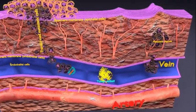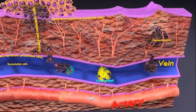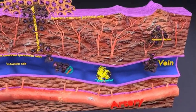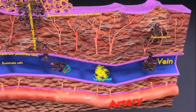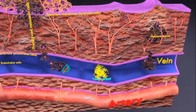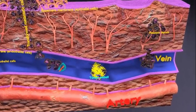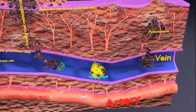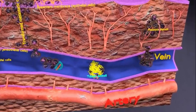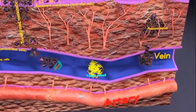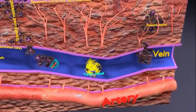Metastasis occurs by the following three routes: transcoelomic, lymphatic spread, and hematogenous spread. The model in this video details the hematogenous or lymphatic route of metastasis.